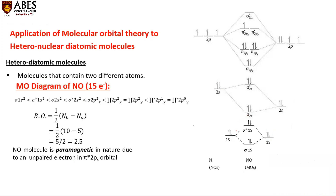Filling begins with the 1s orbital, producing sigma 1s and sigma* 1s. Then the 2s atomic orbitals participate, producing sigma 2s and sigma* 2s. After that, the 2p orbitals combine — three 2p orbitals from each atom produce six new molecular orbitals. First sigma 2pz fills, then pi 2px and pi 2py fill.